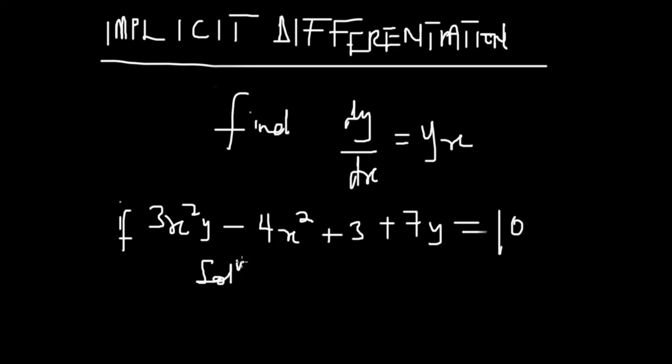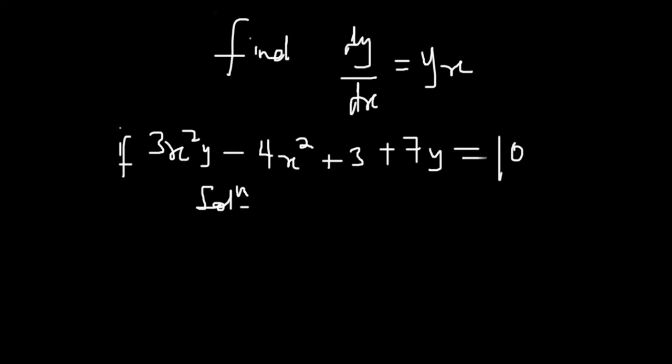Remember that we are doing this in less than 60 seconds. We have 3x²y minus 4x² plus 3 plus 7y minus 10 equals 0. That's the first step.